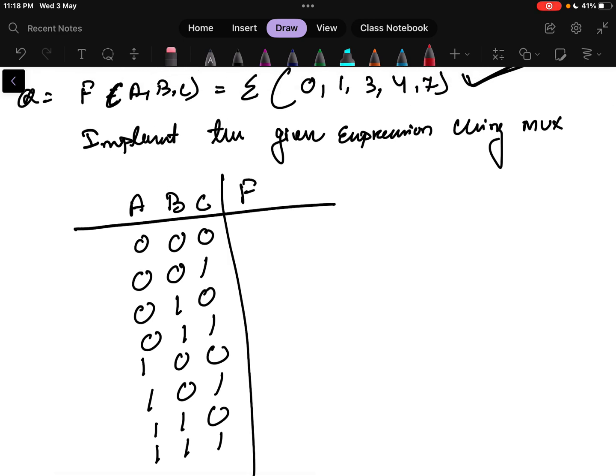Where 0 it is 1, 1 it is 1, 2 is 0, 3 is 1, 4 is 1, 5 is 0, 6 is 0, and 7 is 1. So what I have written is whatever the question given I have just represented that.